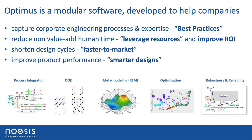Optimus is a modular software tool developed to help companies capture corporate engineering processes and develop best practices, formalizing them into a standard, automated workflow. It enables you to reduce the non-value-added human time in engineering processes, letting your experts spend more time on higher-level engineering challenges rather than data tweaking and passing. Ultimately it is designed to improve your ROI by shortening your design cycle and getting products to market faster while simultaneously improving performance.